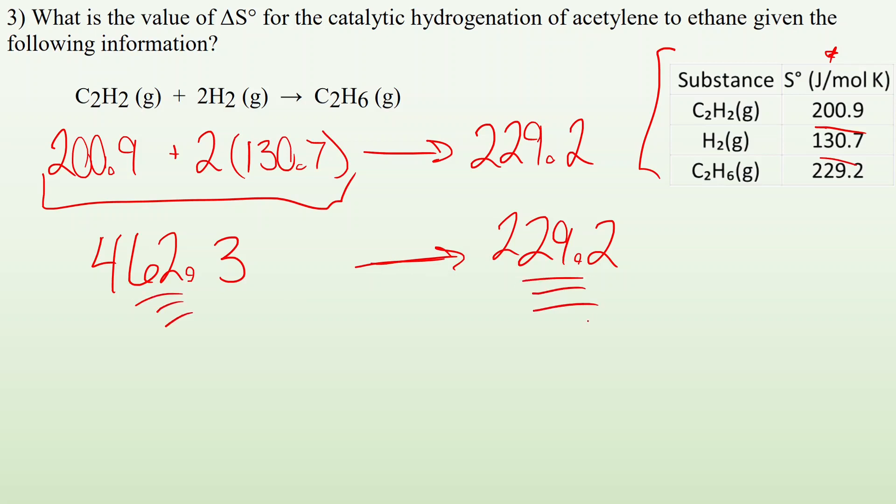So I know my change is going to be a negative value because sometimes I mess up. Instead of doing what should be 229.2 minus 462.3 to give me the negative 233.1 joules per mole Kelvin products minus reactants.